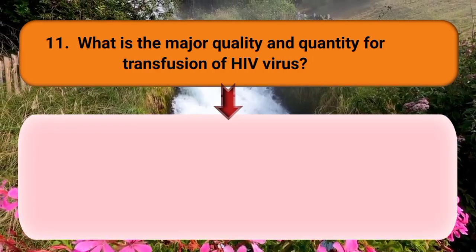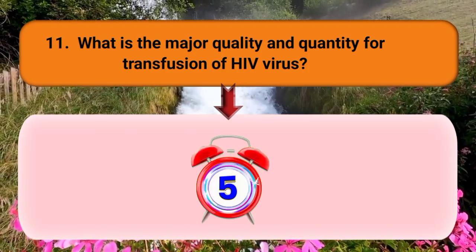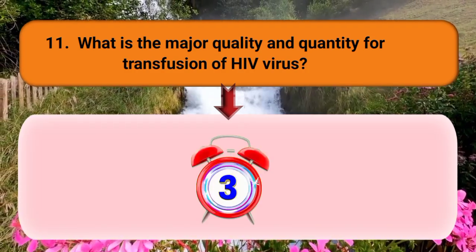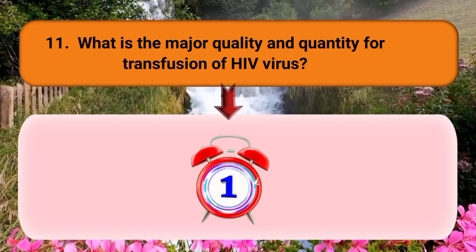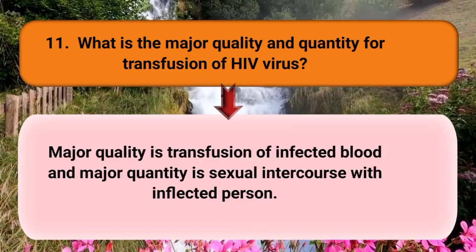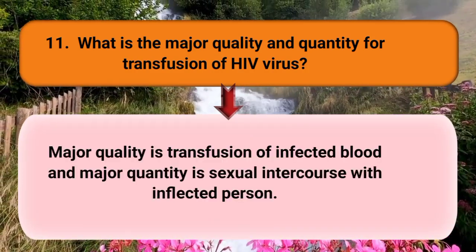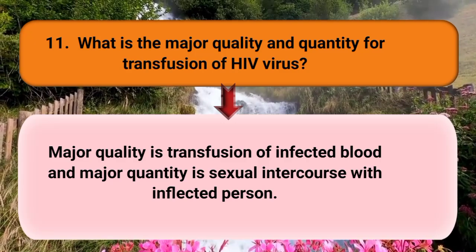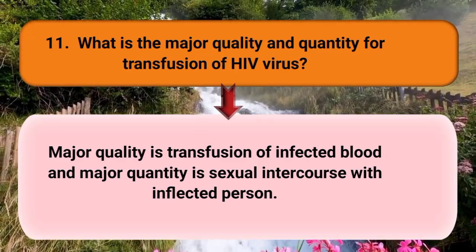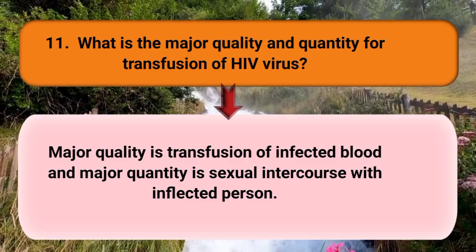What is the major route for transmission of HIV virus? The major route is transfusion of infected blood, and the major mode of transmission is sexual intercourse with an infected person.